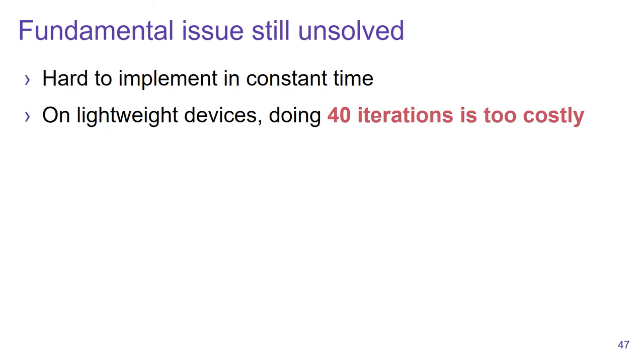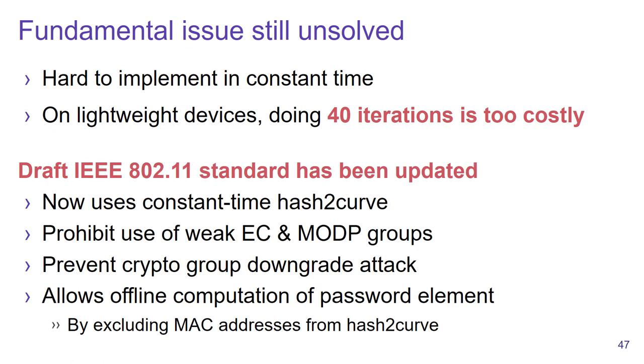Problematic is that Dragonfly is still very hard to implement in constant time. On lightweight devices, doing the 40 iterations is also too costly. In fact, in practice, we see some devices that indeed only execute, for instance, eight iterations. Another issue, but fortunately, the good news is that the IEEE standard is being updated. It is now being updated to use a constant time hash-to-curve algorithm. They are prohibiting the usage of weak crypto groups. They are preventing crypto group downgrade attacks. And they also allow a partial offline computation of the password element.